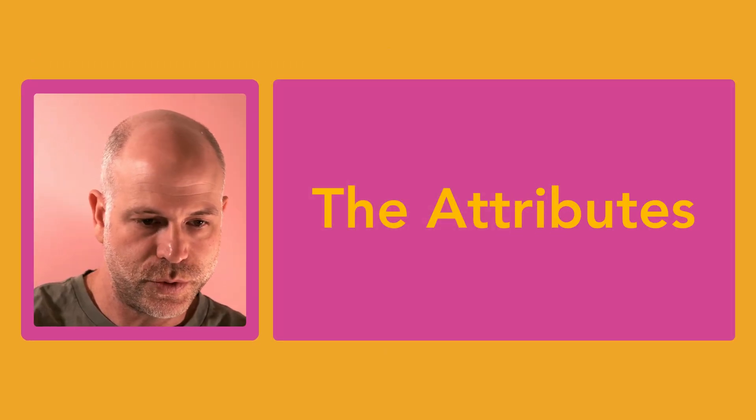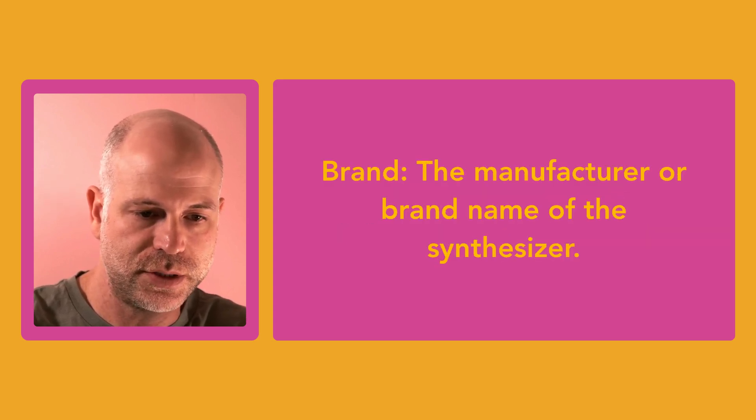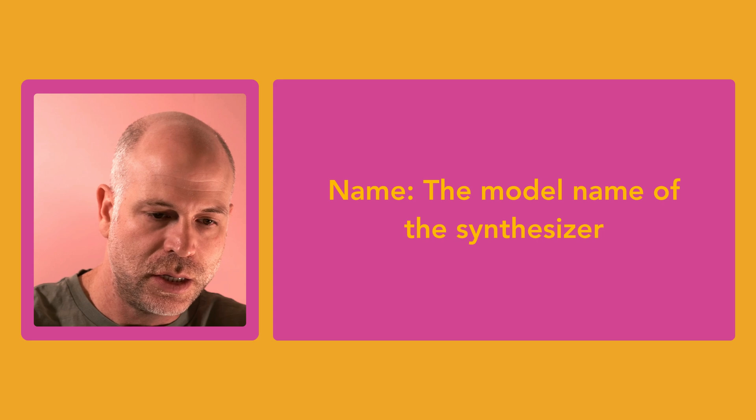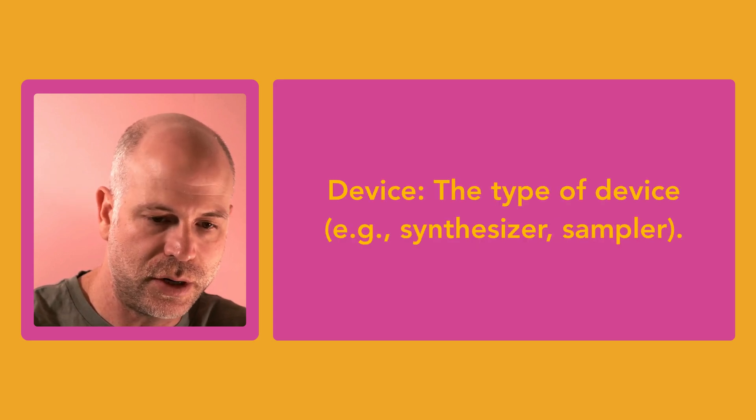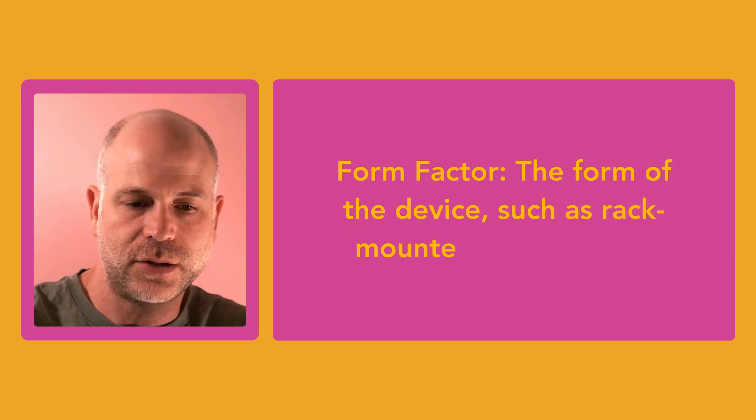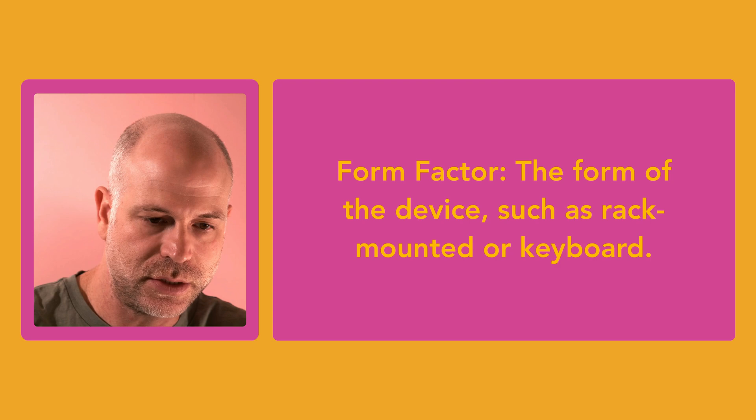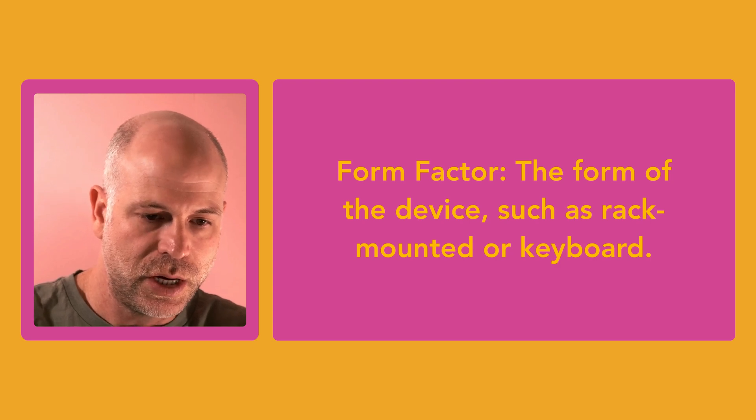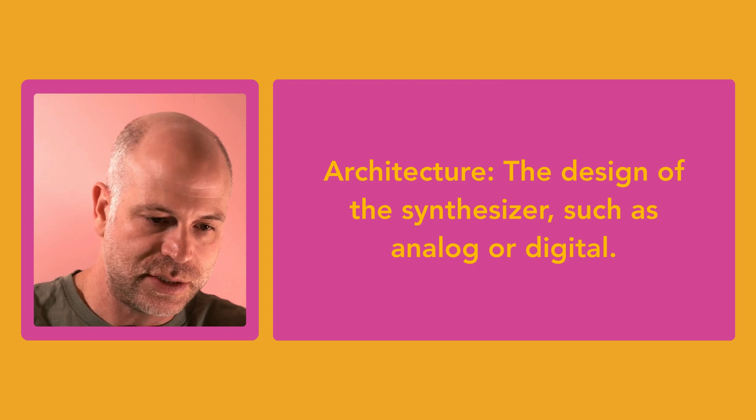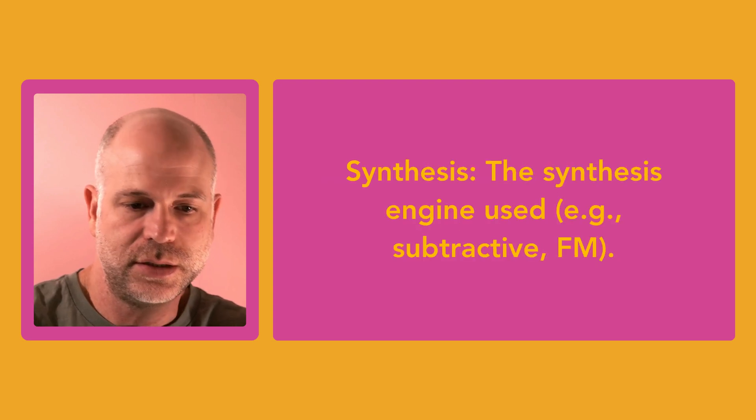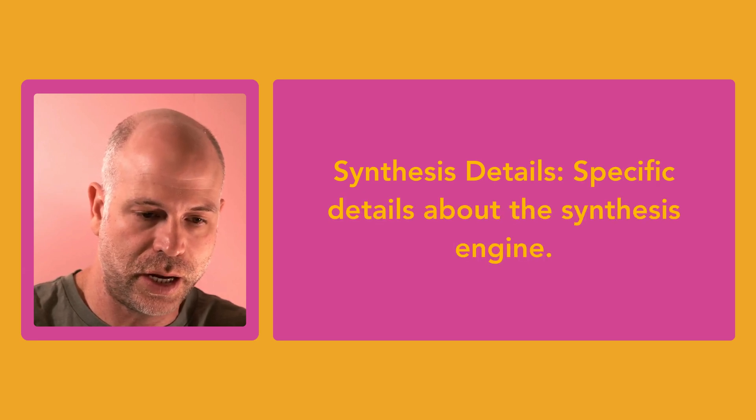I'll just go over the attributes quickly. Year would be release year, obviously. Brand would be the brand of the synth, the name of the synth. The device would indicate which kind of device it is, if it's a synth, sampler, drum machine, or whatever. The form factor would indicate the form factor of the device. Architecture would categorize it to analog, digital, hybrid, or miscellaneous. Synthesis would indicate the synth engine that was being used, and the synthesis details would detail the engine.